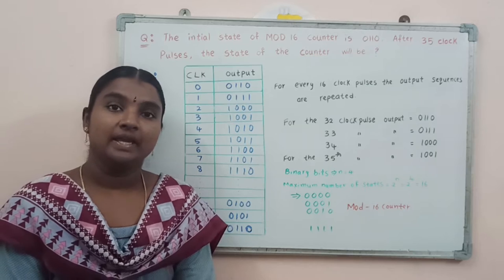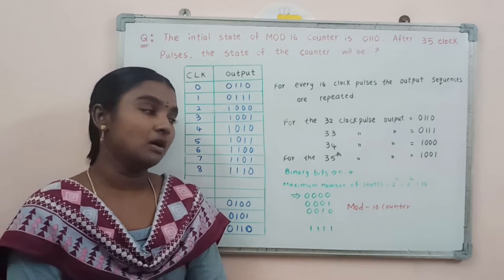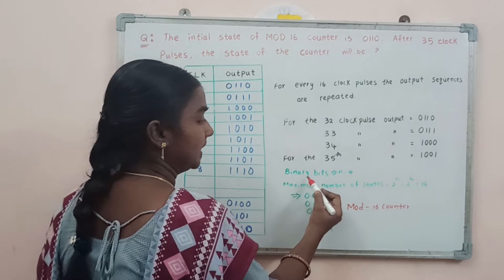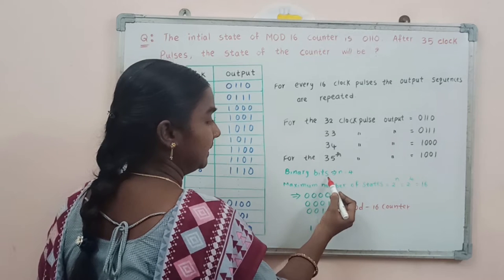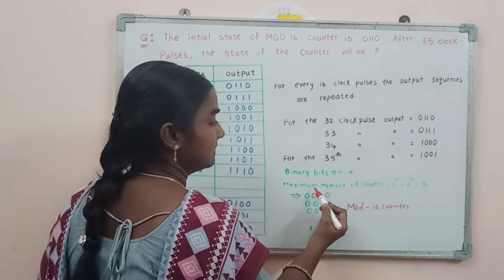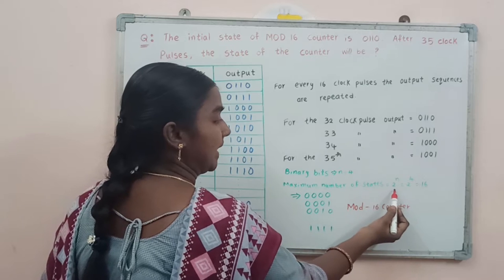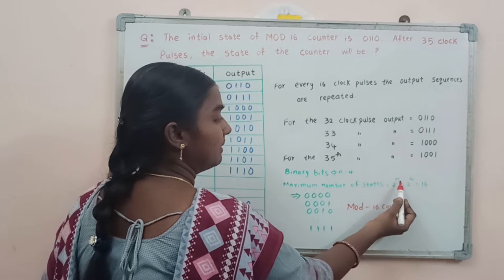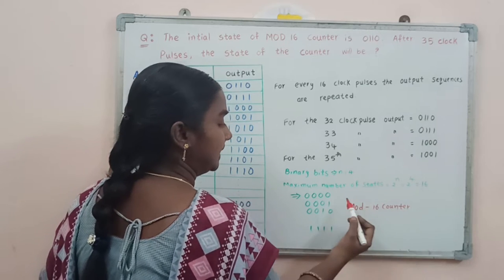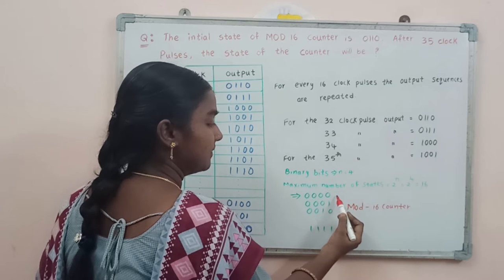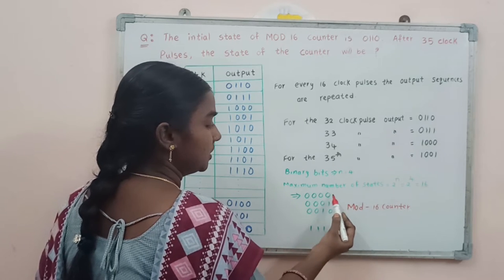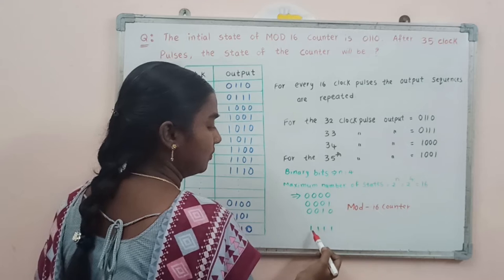If we consider a MOD-16 ripple counter, it consists of n equal to 4 binary bits, the maximum number of states is 2 to the power n which equals 16, and the counting sequences run from 0000 to 1111.